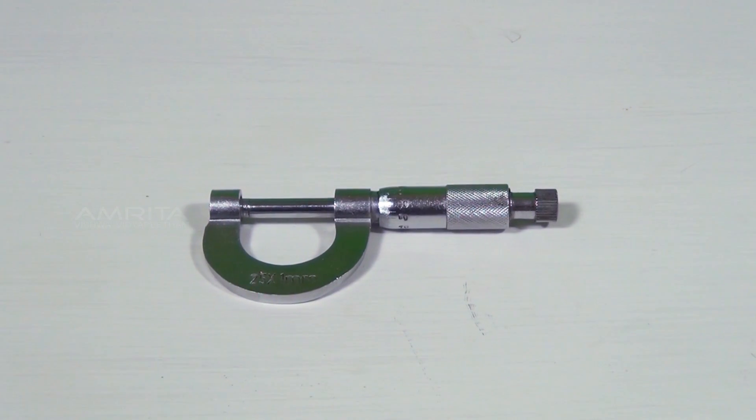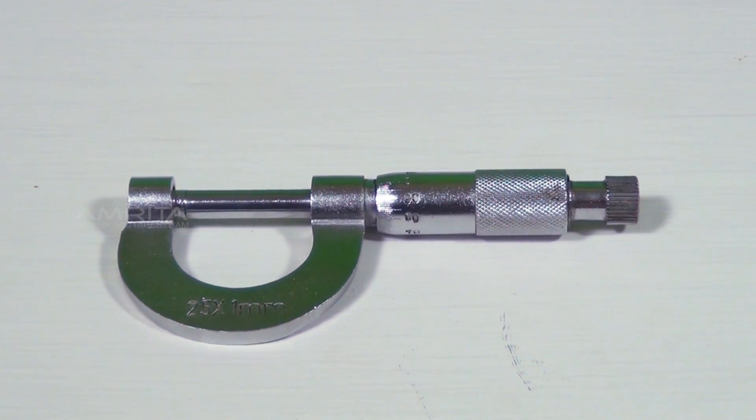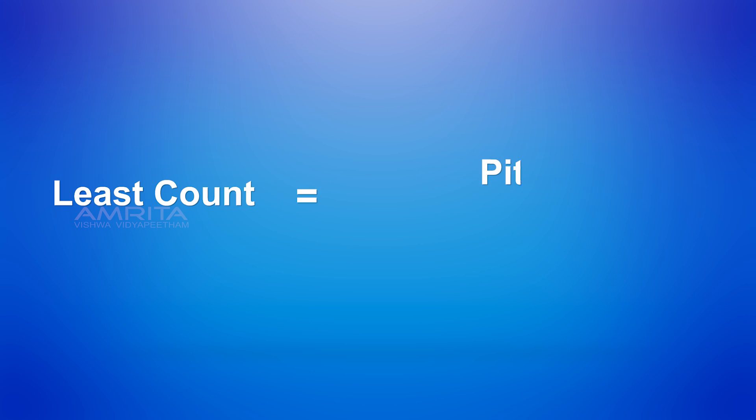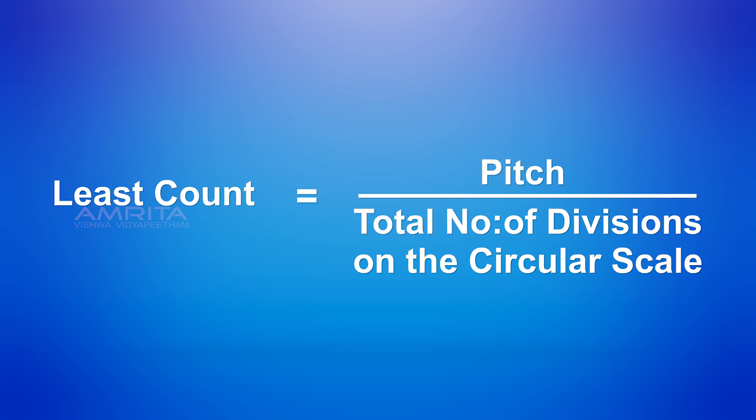The least count of the instrument can be found out using the relation, least count is equal to pitch divided by total number of divisions on the circular scale.